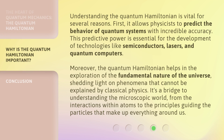Understanding the quantum Hamiltonian is vital for several reasons. First, it allows physicists to predict the behavior of quantum systems with incredible accuracy. This predictive power is essential for the development of technologies like semiconductors, lasers, and quantum computers. Moreover, the quantum Hamiltonian helps in the exploration of the fundamental nature of the universe, shedding light on phenomena that cannot be explained by classical physics. It's a bridge to understanding the microscopic world, from the interactions within atoms to the principles guiding the particles that make up everything around us.